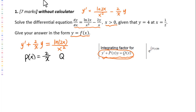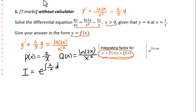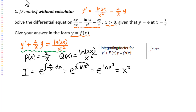Q of x equals natural log of 2x over x squared. So the integrating factor equals e to the integral of 2 over x dx, which equals e to the natural log of x squared, which equals x squared. So the integrating factor is x squared.